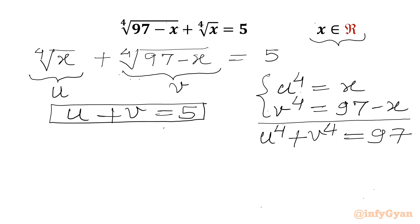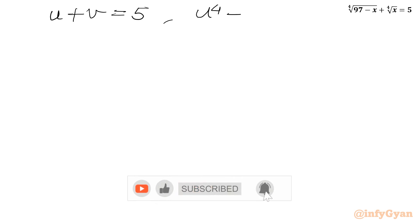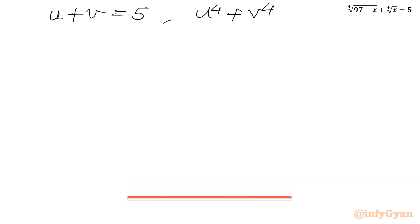Let us call u plus v equals 5 as equation 1, and u⁴ plus v⁴ equals 97 as equation 2.